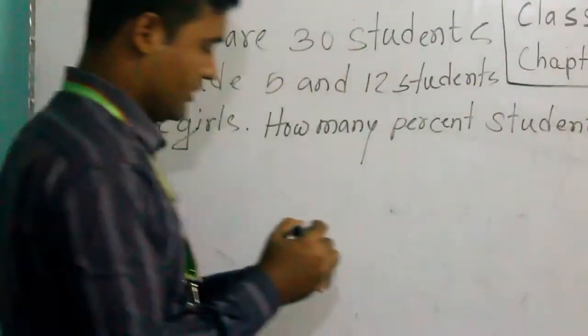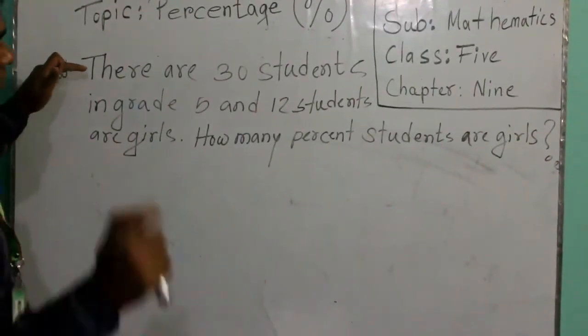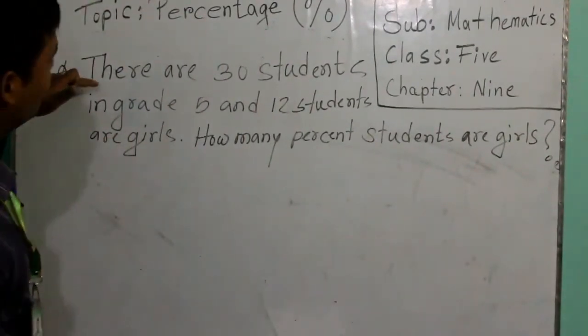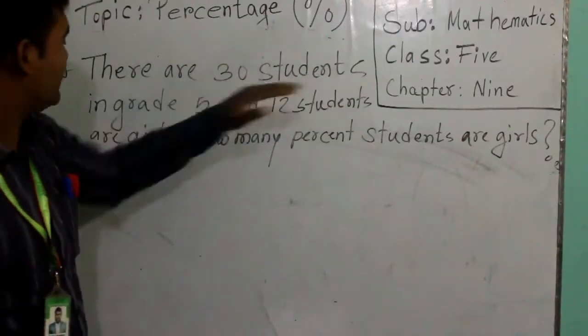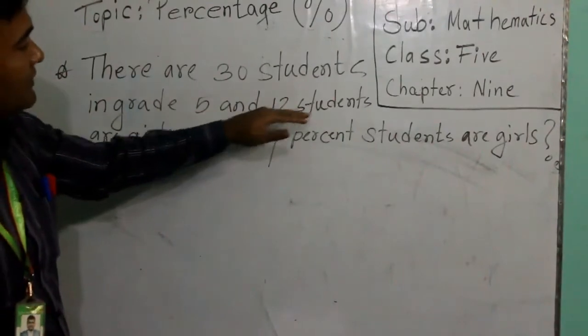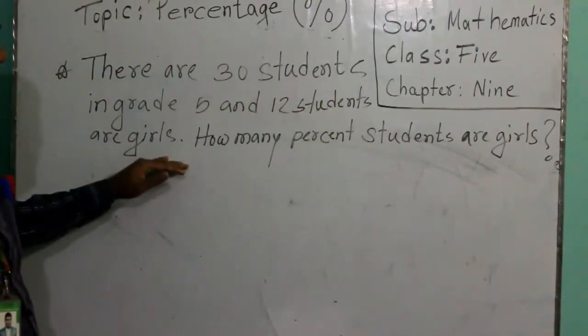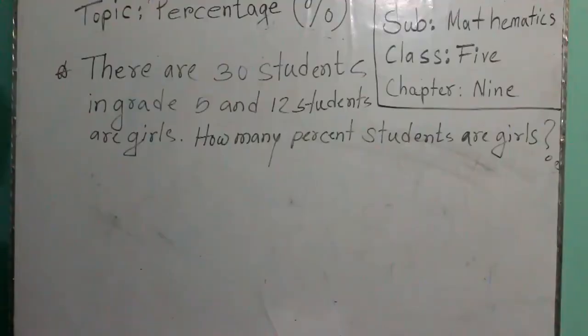Here is the question. If you see, we have done the short way, now we are going to do a word problem. There are 30 students in grade 5, and 12 students are girls. How many percent are girls? Let us try this math, the solution.